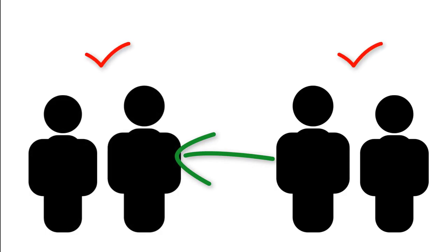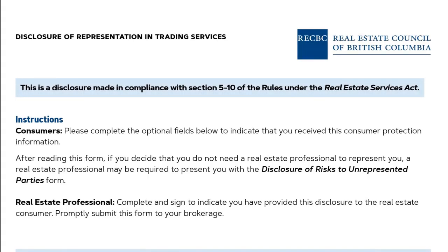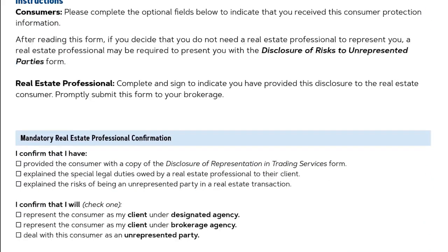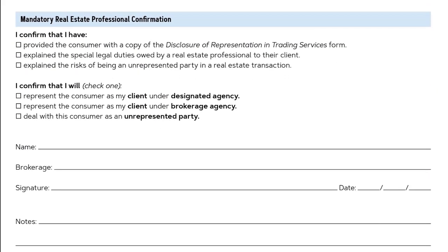In the event that a realtor has a relationship with both a buyer and seller, or a tenant and a landlord, the realtor must not represent either party unless they have obtained written consent from all parties. If this happens, a realtor can provide a referral to another designated agent who can provide the client with an agency relationship.